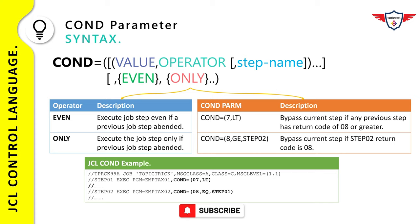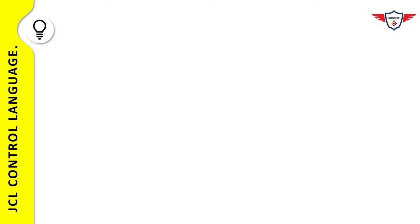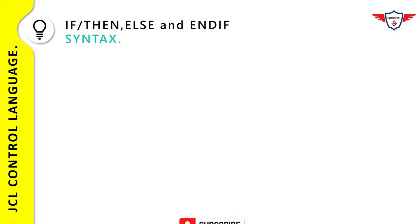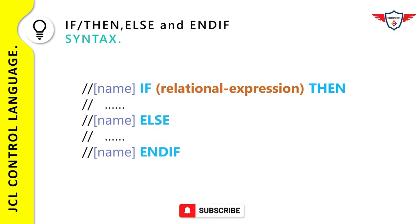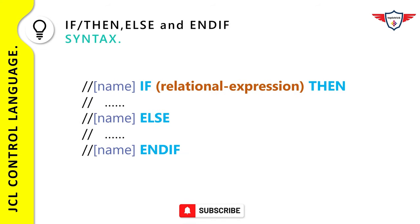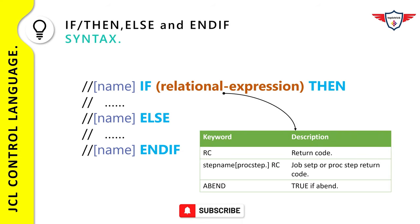During the early days, conditional parameters were the only option for conditional processing in JCL. But because they are awkward and confusing, later versions of the operating system added three JCL statements that work together for conditional processing: IF, THEN, ELSE, and END-IF. Let's understand how to use the IF THEN ELSE statement to process job steps conditionally. Here is the syntax of the IF THEN ELSE statement.